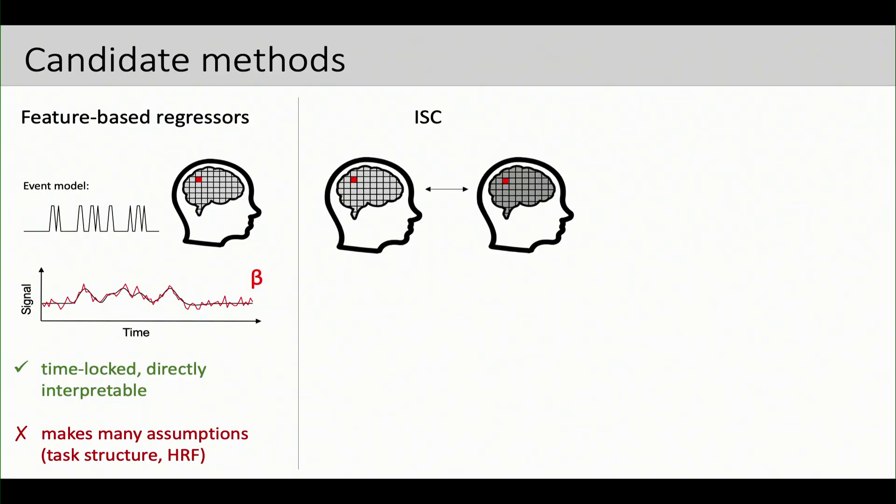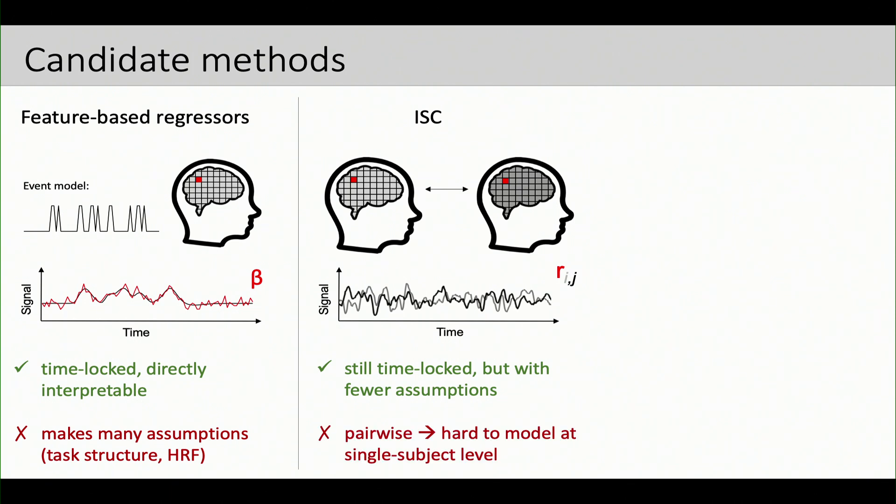Intersubject correlation and related approaches, as I mentioned on the previous slide, this is where we're looking at for, let's say, a given pair of subjects. If we look at the same brain region in both people as they're watching this time-locked movie, if we see a correlation in the activity across people, we can infer that that region is somehow involved in processing the stimulus. And the advantage of intersubject approaches is that they're still exploiting this time-locked nature. So they're still taking advantage of the fact that subjects are seeing the same thing at the same time, but they're making fewer assumptions about our ability to actually model that stimulus itself. The disadvantage is that this is inherently a pair-wise measure, and so this makes it a bit harder to model at the single-subject level, and I'll come back to that.